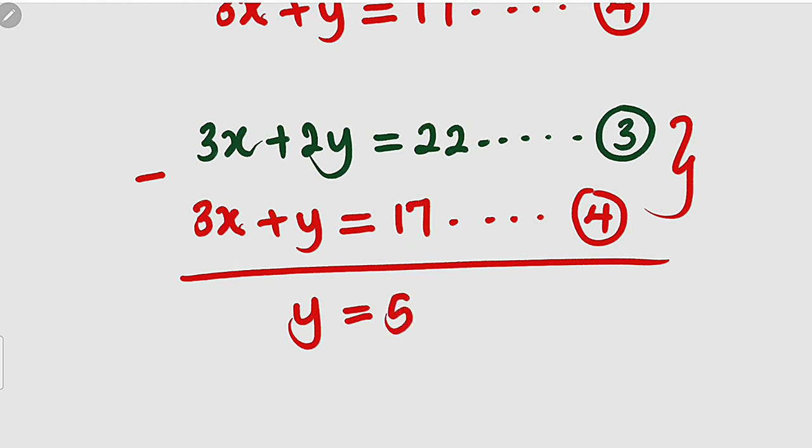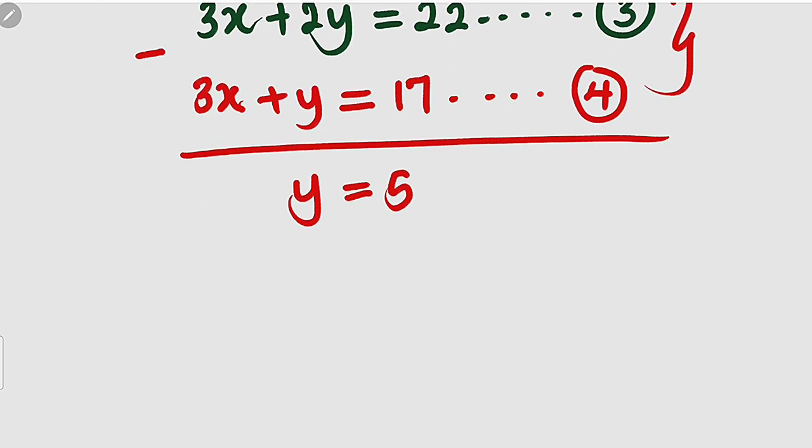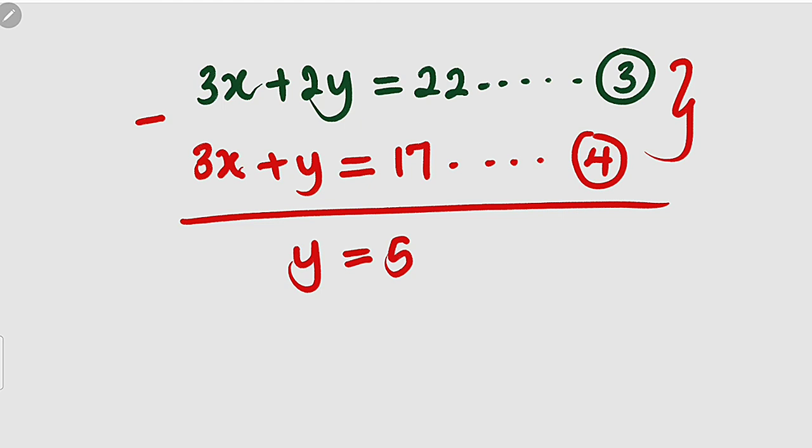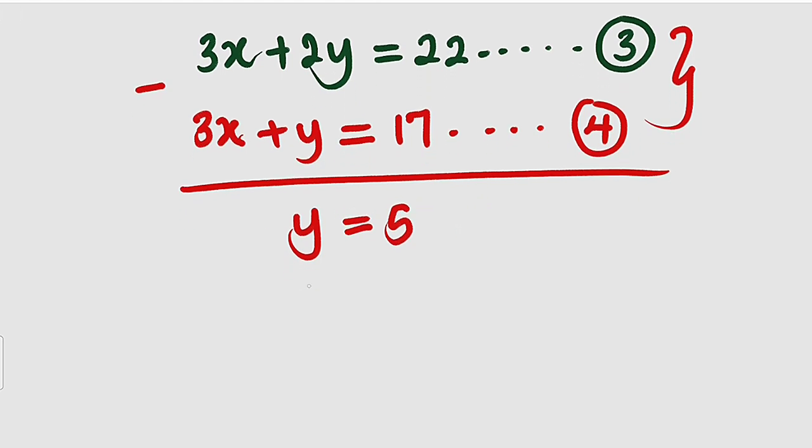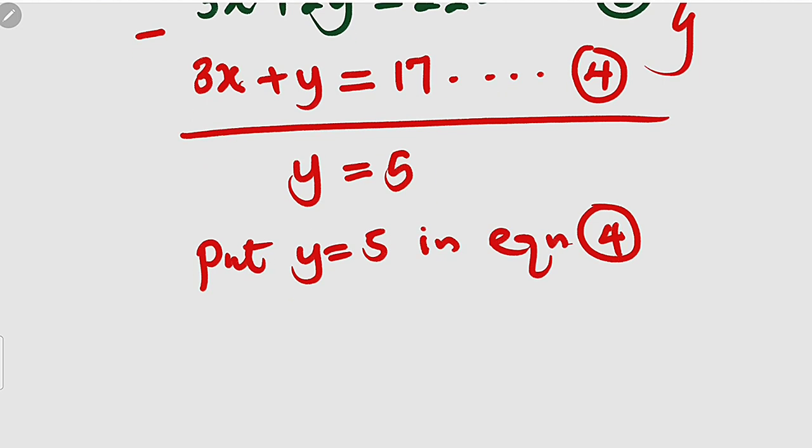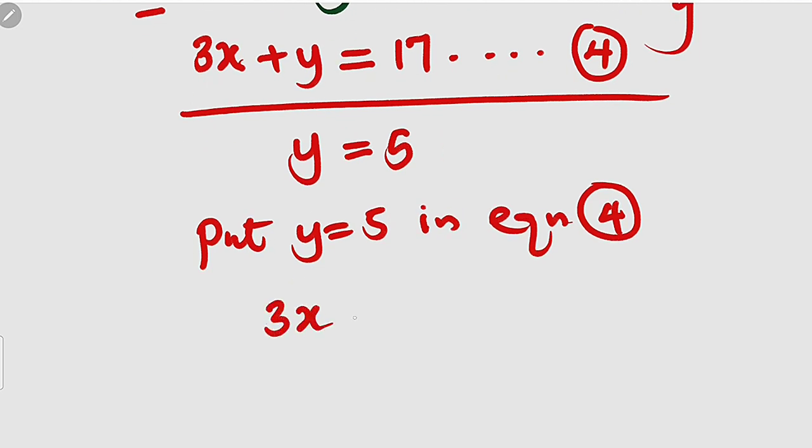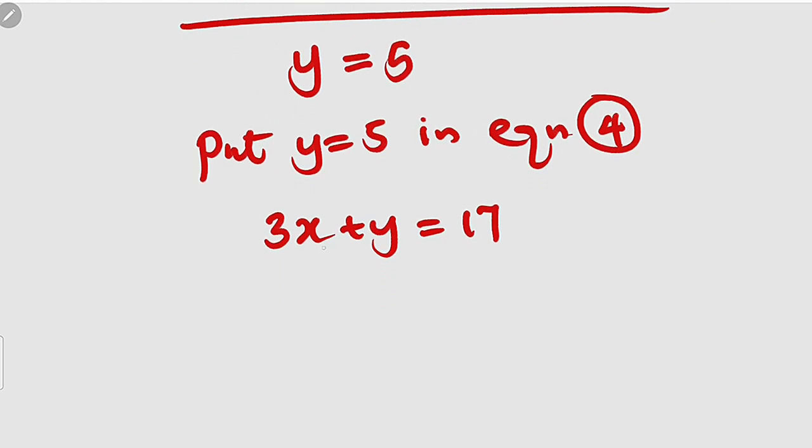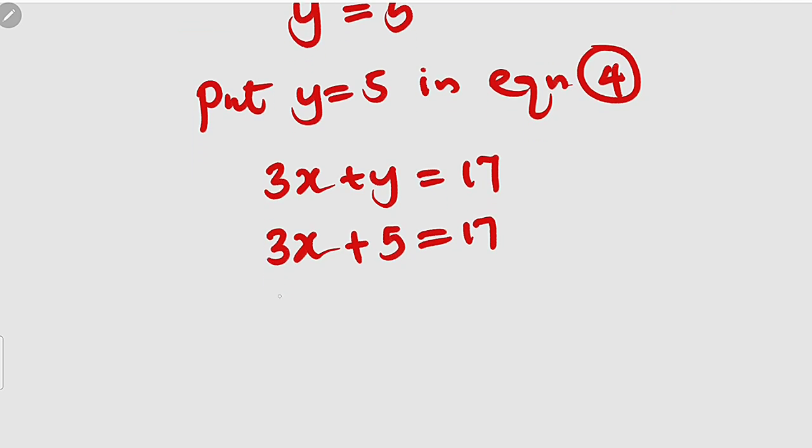Then we can substitute y equal to 5 in any of these equations. Let me use equation number 4. So put y equal to 5 in equation number 4. Equation number 4 is 3x plus y equals 17. For which y is 5. We have 3x plus 5 equals 17. Take 5 to the other side. You have 3x equal to 17 minus 5 which is 12.